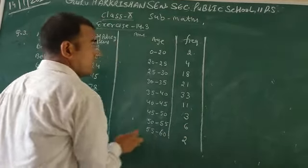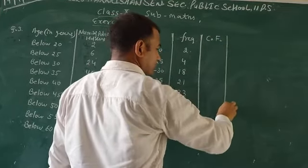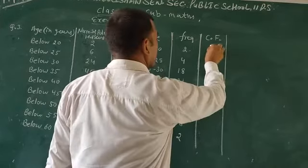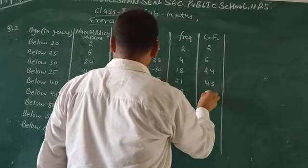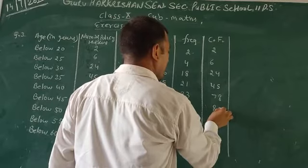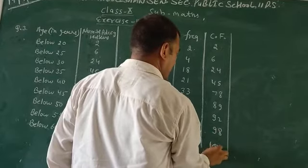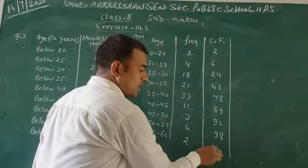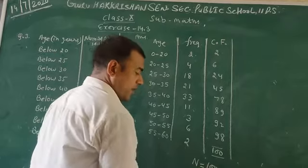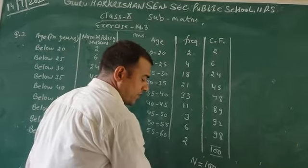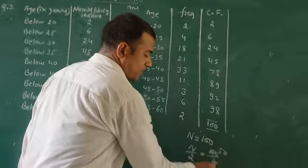In CF we have 2, 6, 24, 45, 78, 89, 92, 98, 100. This is cumulative frequency CF. N equals 100. N by 2 equals 50, so N by 2 is 50.